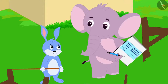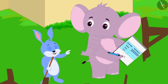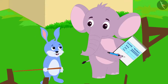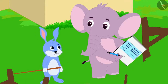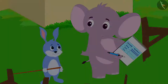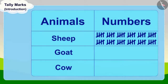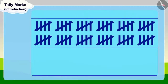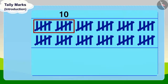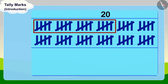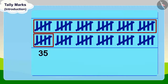Bunny laughed and said, you just count these groups of five. Appu got very excited. He immediately began counting those groups of five: five, ten, fifteen, twenty, twenty-five, thirty, thirty-five.